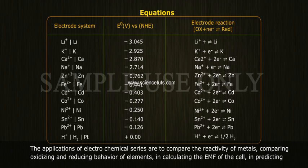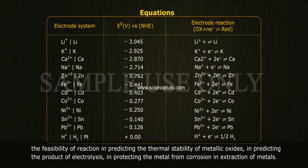The applications of the electrochemical series are: comparing the reactivity of metals; comparing the oxidizing and reducing behavior of elements; calculating the EMF of a cell; predicting the feasibility of a reaction; predicting the thermal stability of metallic oxides; predicting the product of electrolysis; protecting metals from corrosion; and extraction of metals.